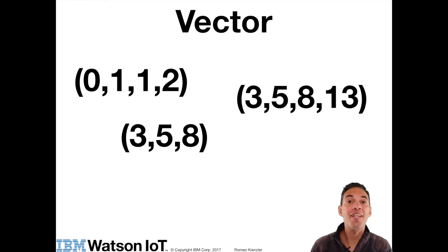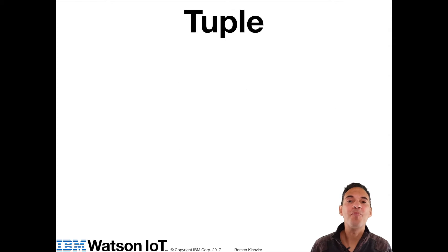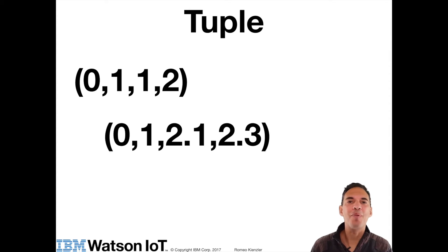So a vector can easily be confused with a tuple. So this guy here can be either a vector or a tuple. But this is a tuple. Can you see the difference? So in a vector, each element has to have the same type, whereas in a tuple, types can be mixed.